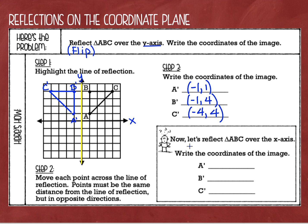Now it says let's reflect triangle ABC over the x-axis. Let's highlight our line of reflection — this time I'm going to highlight the x-axis in pink. We'll do this whole problem in pink. So we're going to reflect triangle ABC over the x-axis. It's going to start here on the top of my graph and end up down here on the bottom. I'm going to flip it over this pink line.